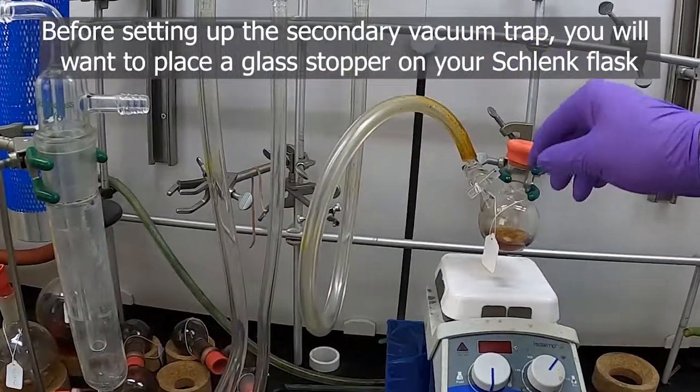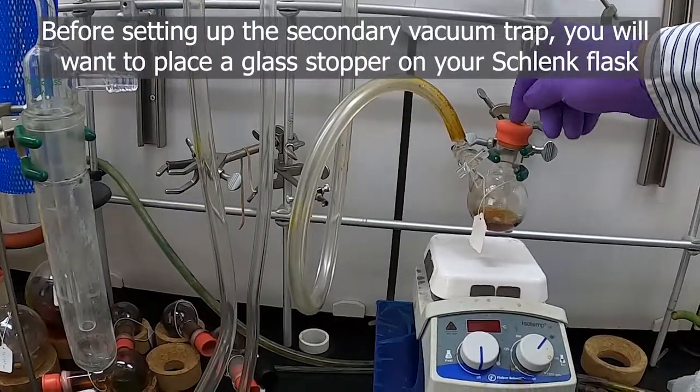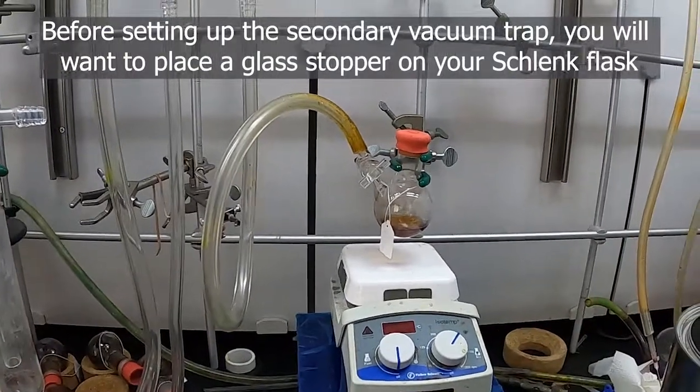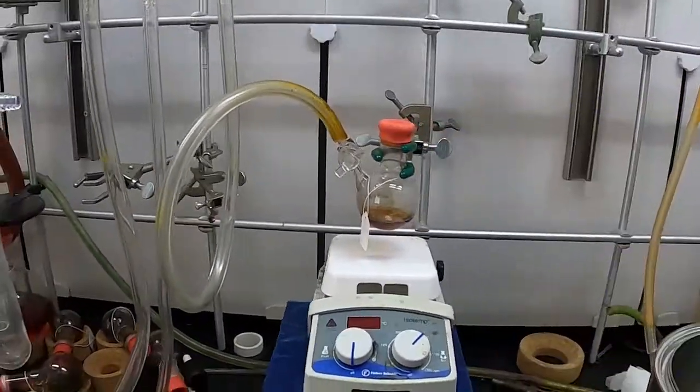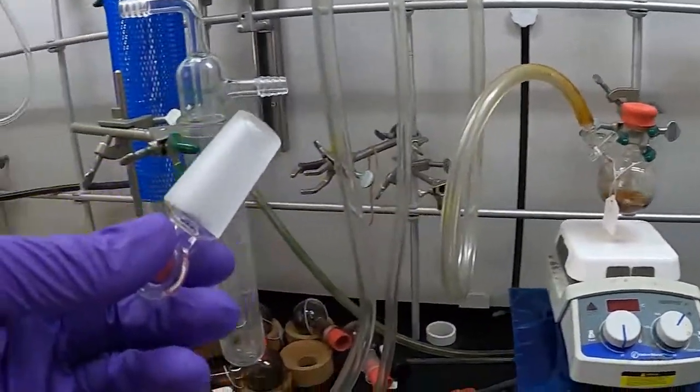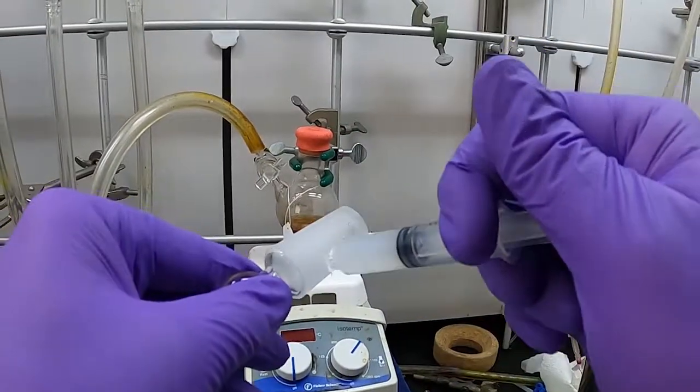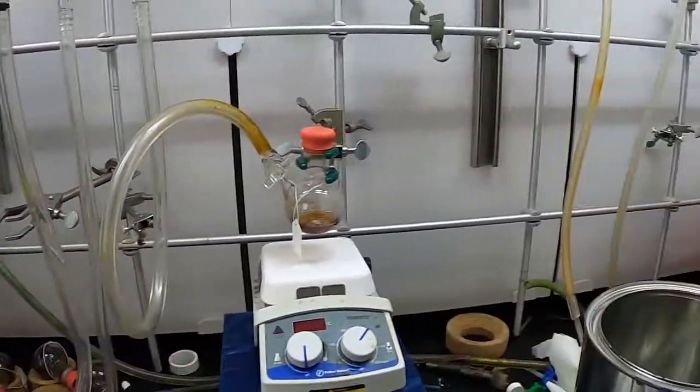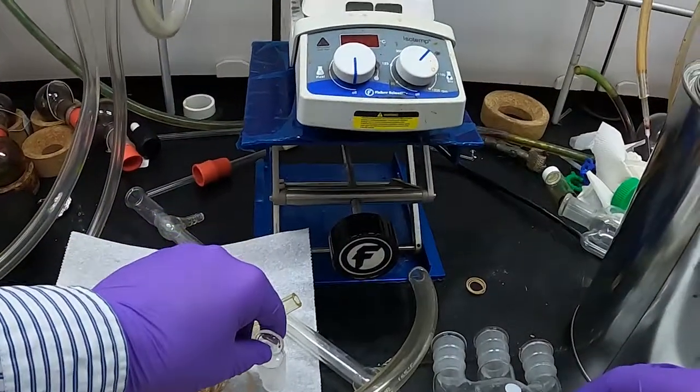The first thing we want to do is take off this septum. As you can see, it's cracked and there's holes punctured in it already. We don't want air to be pulled in by pulling vacuum directly under that, so we're going to replace this with a glass stopper. First, we grab a glass stopper and put some grease on it. Now it's all set to be put in our flask.